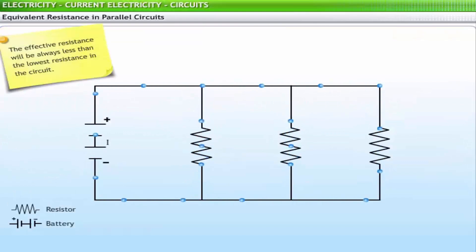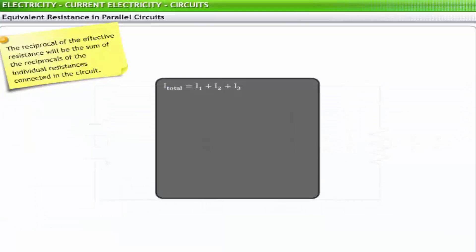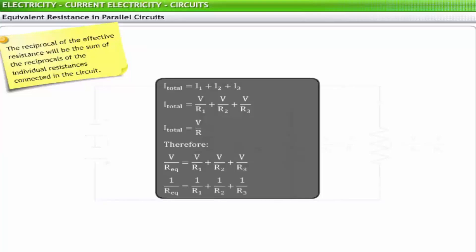Let the equivalent resistance be R. You can calculate the amount of current flowing through each resistor as the ratio of the voltage drop across that resistor to its resistance. Substituting the values of I1, I2, and I3 into I_total = I1 + I2 + I3, you get V/R = V/R1 + V/R2 + V/R3. This gives: 1/R = 1/R1 + 1/R2 + 1/R3.